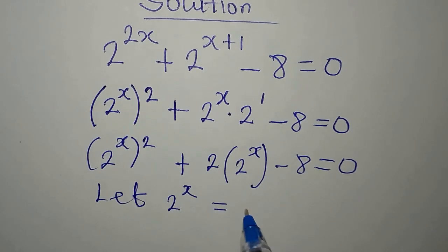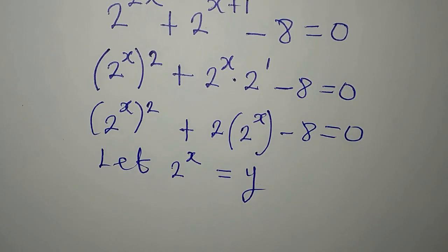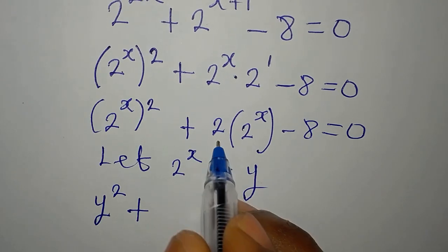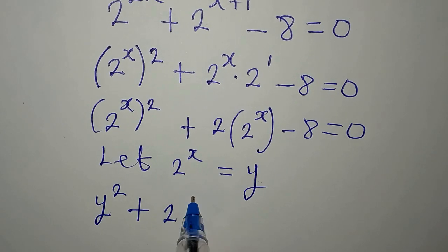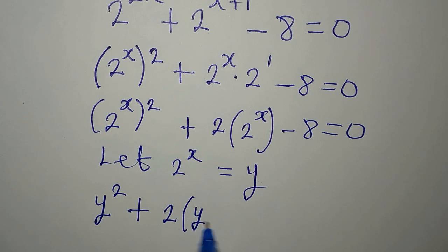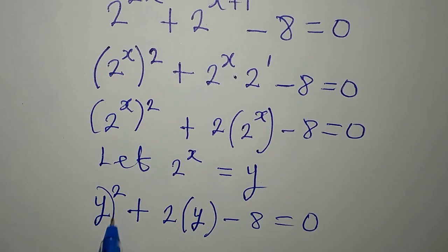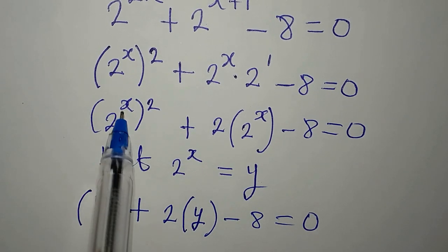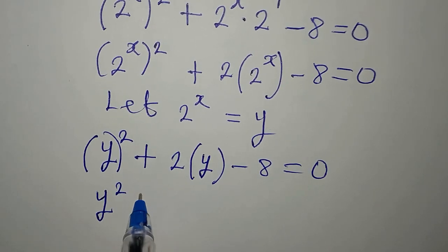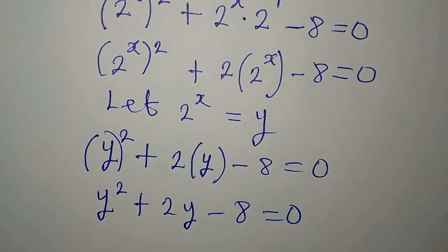This means we have (2^x)^2 + 2·(2^x) - 8 = 0. Now let's substitute y = 2^x, since 2^x appears in two places. With this substitution, we get y² + 2y - 8 = 0.